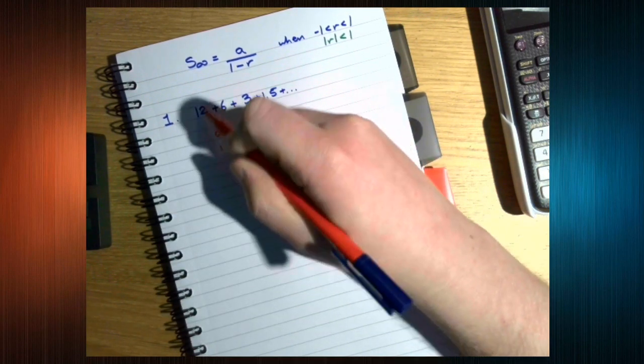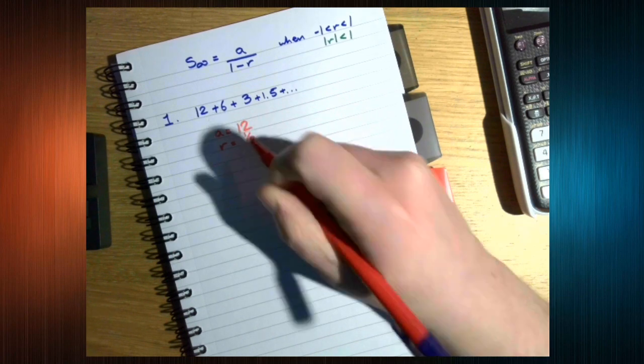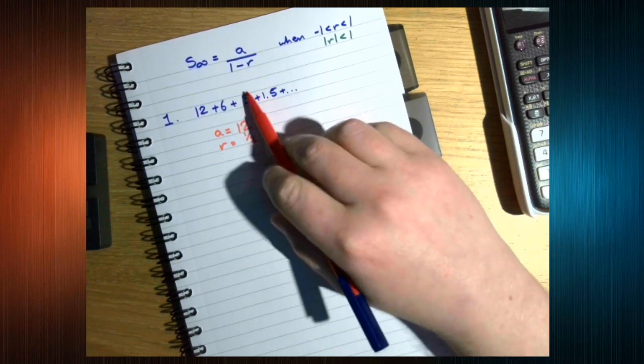We need the common ratio, which we can see is a half. Because we're doing 12 goes to 6, goes to 3.